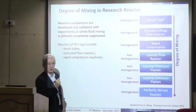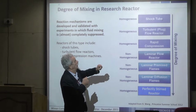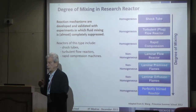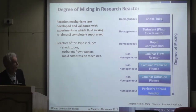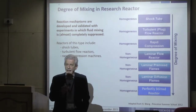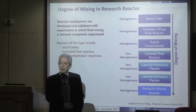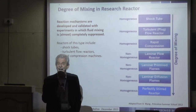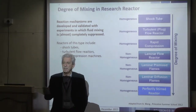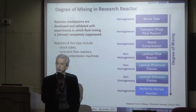Ideal conditions are obtained typically in reactors like the shock tube, the turbulent plug flow reactor, and the rapid compression machine. In principle they are homogeneous reactors, and the ideal conditions allow us to validate and compare experimental results with simulation. We also have a perfectly stirred reactor where mixing is practically complete, so all the volume has the same concentration and temperature.